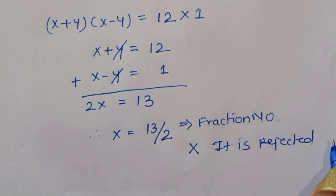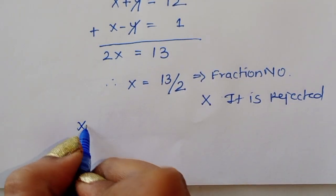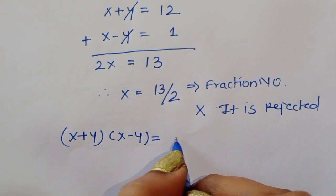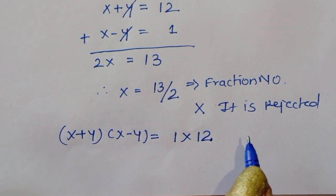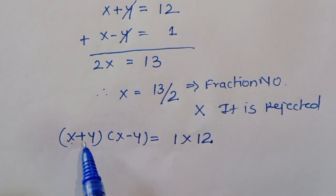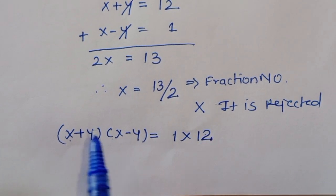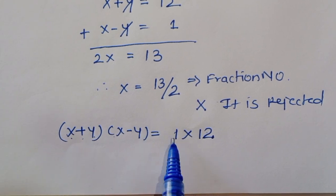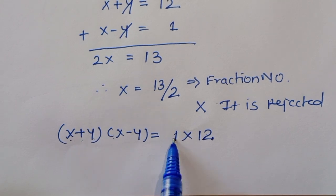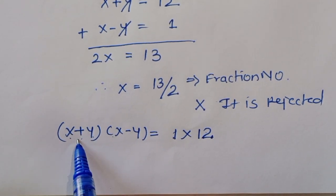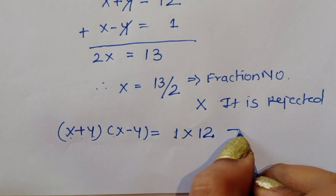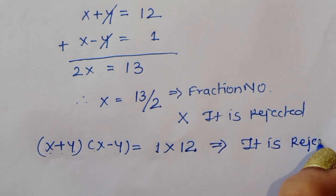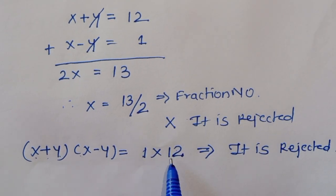Case 2: (x + y)(x - y) = 1 × 12. Here x + y = 1 and x - y = 12. Since x + y is less than x - y — that is, 1 < 12 — this violates the given condition x + y > x - y. Therefore, this case is rejected.